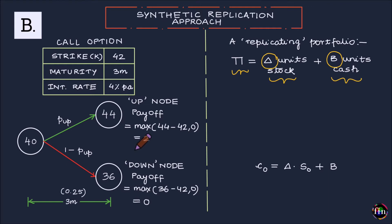Essentially all I am saying is that if this is a replicating portfolio, if I were to reach the up node, the value of this replicating portfolio should be equal to the value of this call option as of this node which I know is $2.